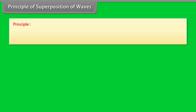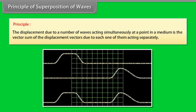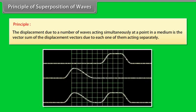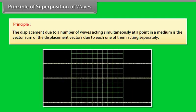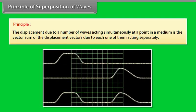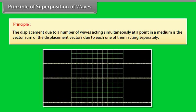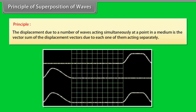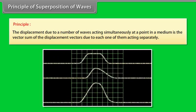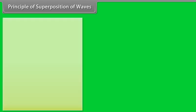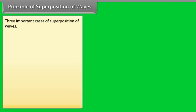Principle of superposition of waves: The displacement due to a number of waves acting simultaneously at a point in a medium is the vector sum of the displacement vectors due to each one of them acting separately. Consider two pulses approaching each other. When the pulses cross each other, they combine to produce a resultant pulse. After crossing each other, they again begin to travel independently as if nothing had happened. This gives rise to three important cases of superposition of waves.